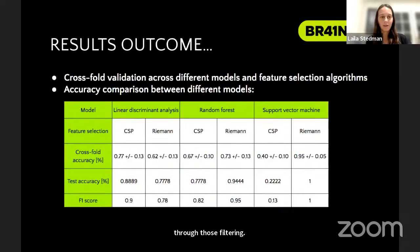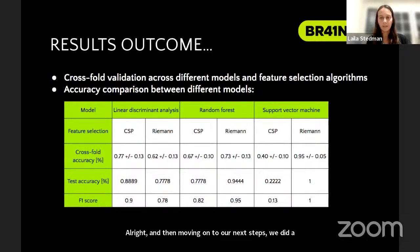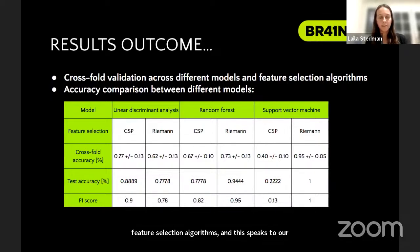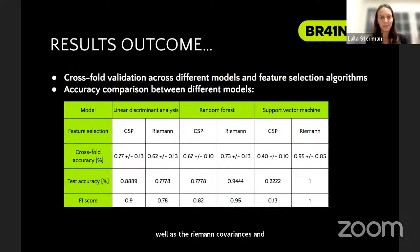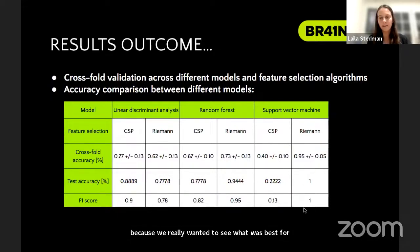Moving on to our next steps, we did a cross-fold validation across different models and feature selection algorithms. This speaks to our feature selection with the common spatial pattern as well as the Riemann covariances, and then the different models we decided to use because we really wanted to see what was best. As you can see on the bottom right, we found that the best combination was actually the Riemann with the support vector machine.